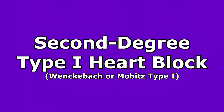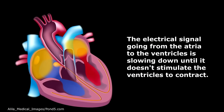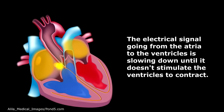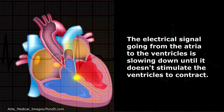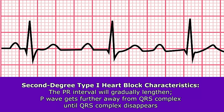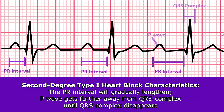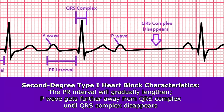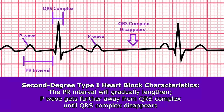Next, let's look at second-degree type 1 heart blocks, also known as Mobitz type 1 or Wenckebach. This rhythm occurs because the electrical signal traveling from the atria to the ventricles gets progressively slower until it doesn't stimulate the ventricles to contract and produce a QRS complex — so we drop a QRS complex. The key feature is that the PR interval gradually lengthens, the P wave gets further from the QRS, until there is a P wave with a missing QRS, and then the cycle repeats.